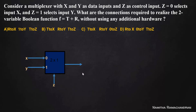Now we can write the expression corresponding to this. The given output function is f equal to t plus r. We can write the expression using the selection line and inputs. That is, f equals set-complement times x plus set times y. When set equals 0, it selects x; when set equals 1, it selects y.